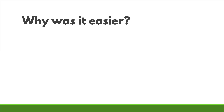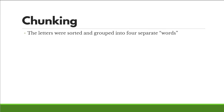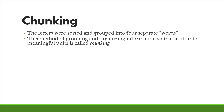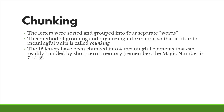Why was it easier? Two reasons: first, the letters were chunked — sorted and grouped into four separate words. Second, those chunks had more meaning. If you're American, you'll recognize abbreviations like YMCA or JFK, which are very familiar. We can use what we already know to store additional information. Once it's in your short-term memory, the more chunked and sticky it is, the easier it is to move into long-term memory. Remember, the magic number is seven plus or minus two — four meaningful chunks are easy to transfer.